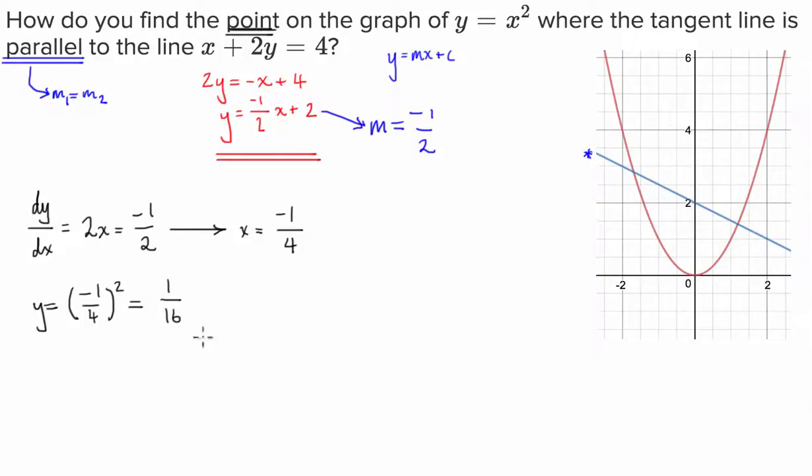So our point, let's call it p, is equal to negative 1 over 4, comma 1 over 16.